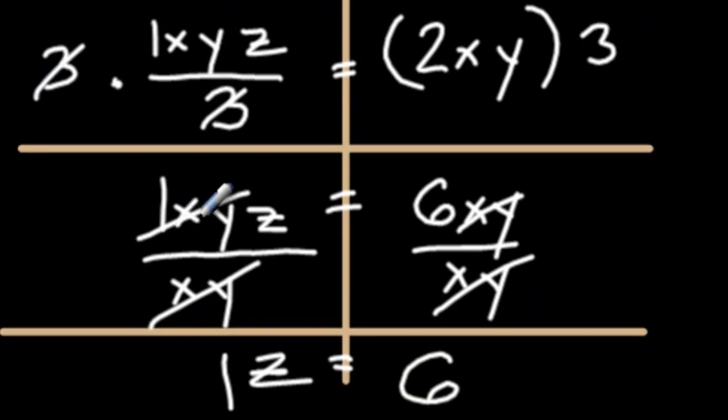That drops down to 1xyz equals 2xy times 3 is just 6xy. My last move was to divide both sides by xy.